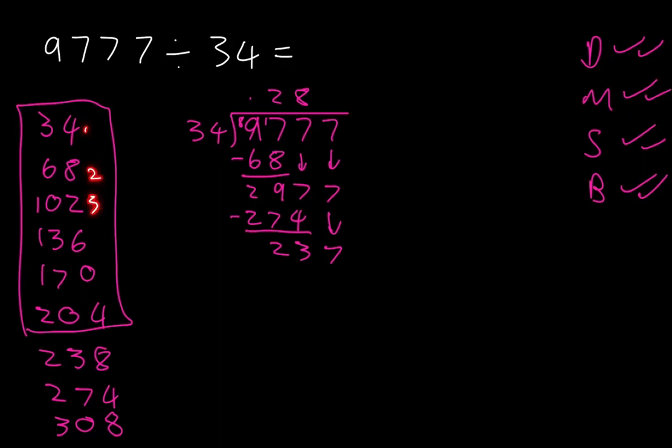It goes in 1, 2, 3, 4, 5, 6 times. So we put a 6 up there. What's 6 times 34? It's 204. And we'll subtract.